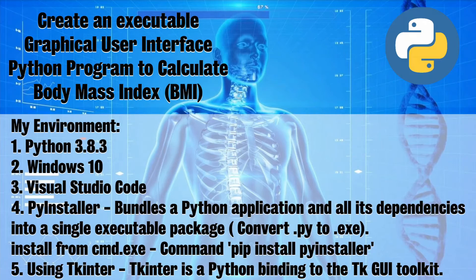I'm using Python 3.8 installed on Windows 10 and also Visual Studio Code to write my Python code. I'm going to use PyInstaller, which bundles a Python application and all its dependencies into a single executable package, to convert the Python file into an .exe file. To install PyInstaller, open the command prompt and type pip install PyInstaller. Make sure that pip is already installed on your machine.